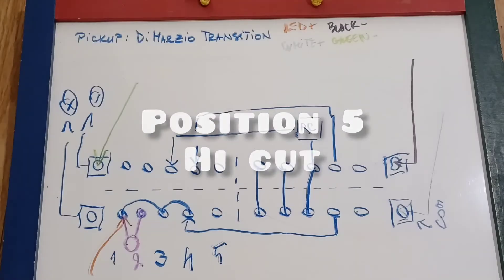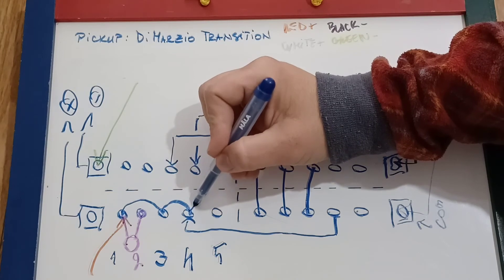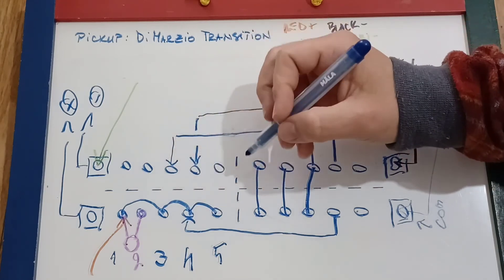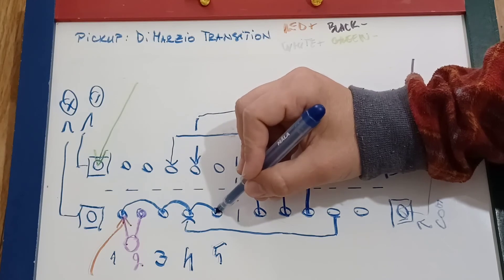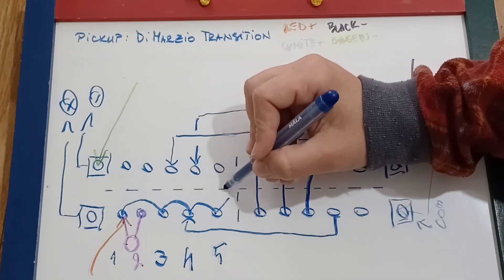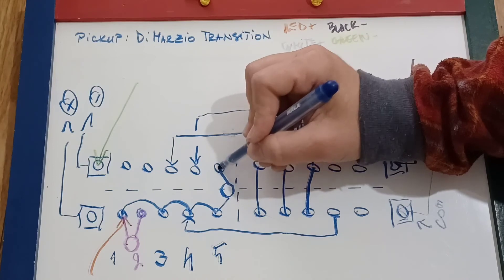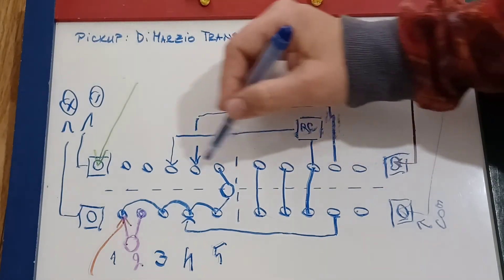So we are almost done. In position five, I put a high cut filter, so I still need my signal, another jumper, and then as we saw, a high cut goes from the signal through the cap and then it goes to ground.